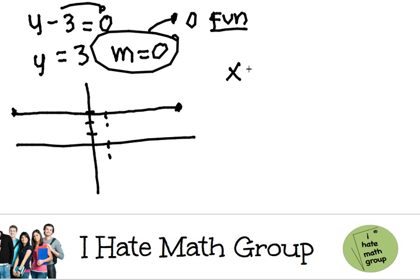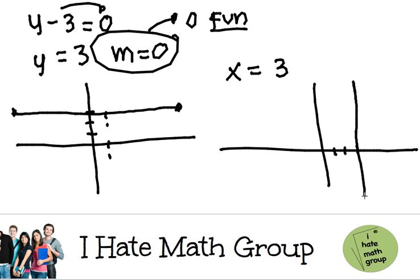But what about if I had x equals 3? Well, the line is a little bit different because you go to the x-axis and you go 1, 2, 3 and then you do what we call a vertical line.